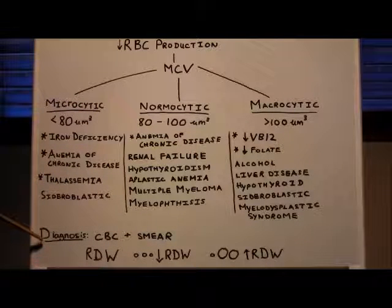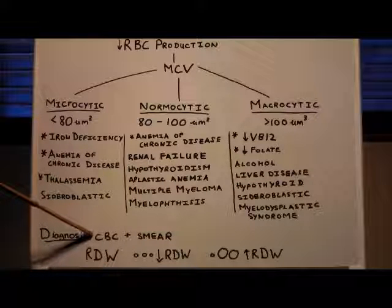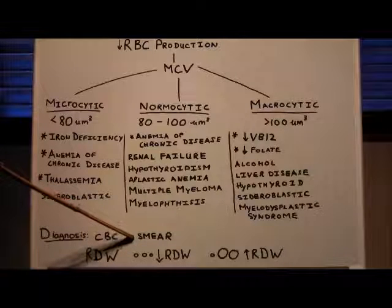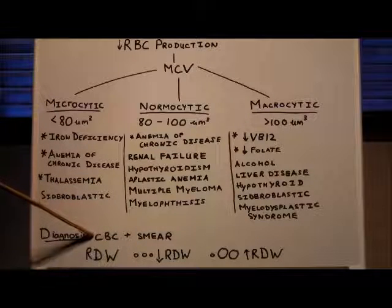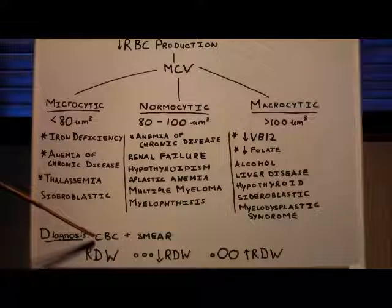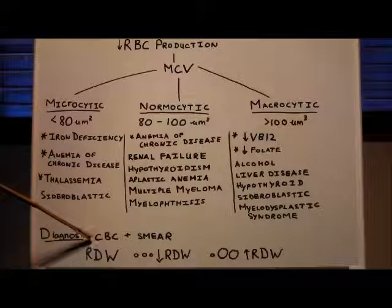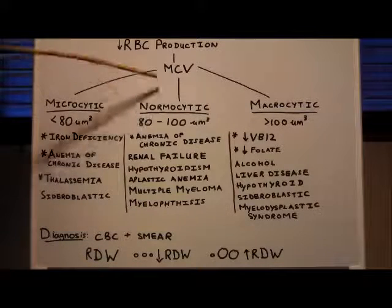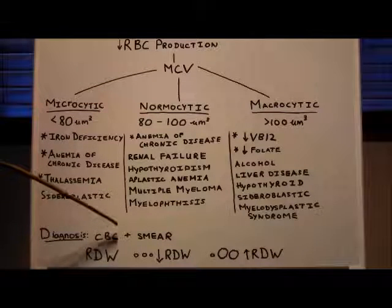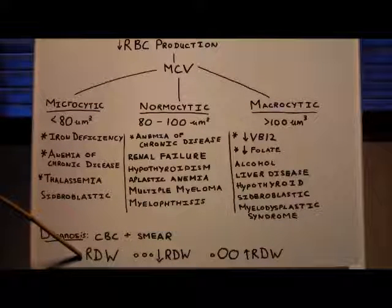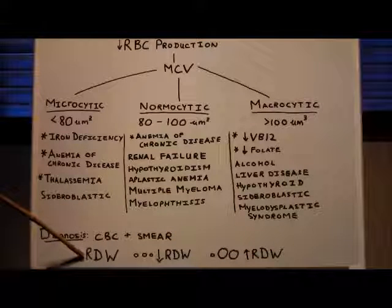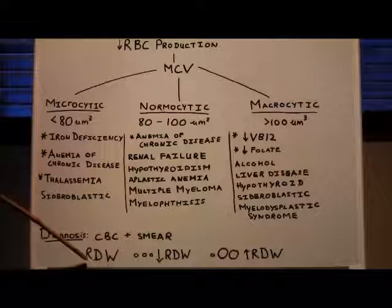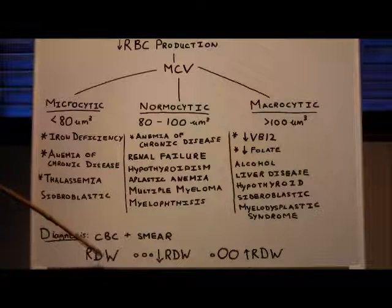So diagnosis. To diagnose anemia, usually we order a CBC, which is a complete blood count, and a smear. A smear is just looking at the red blood cells under a microscope to see what they look like. A complete blood count includes a bunch of tests: your hemoglobin, your red blood cell number, your white blood cells, your platelets, your MCV. It'll give you most of the things you need.